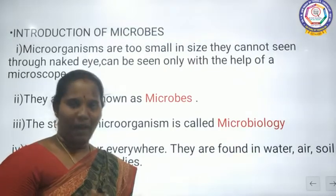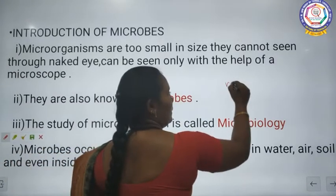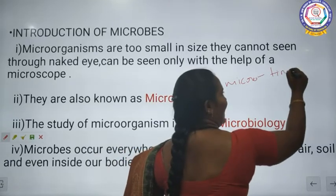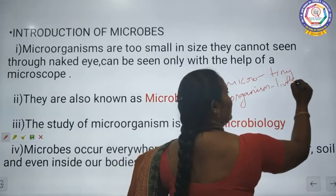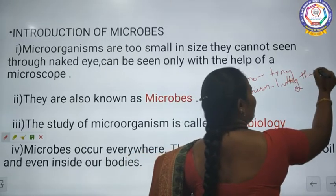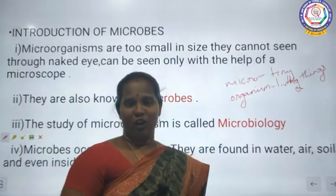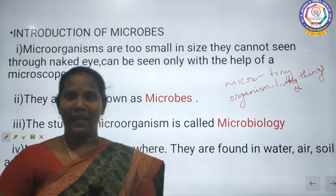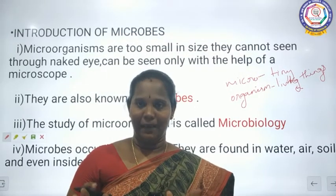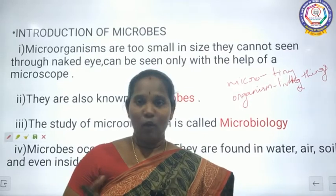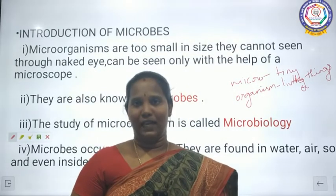What is meant by microorganism? Micro means very tiny. Organism means living things. So microorganism means very tiny living things. Do we see microorganisms compared to other organisms? No. They are all very tiny, so we cannot see them with our naked eye. Then how can we see the microorganism? With the help of a microscope, only then we can see the microorganism.